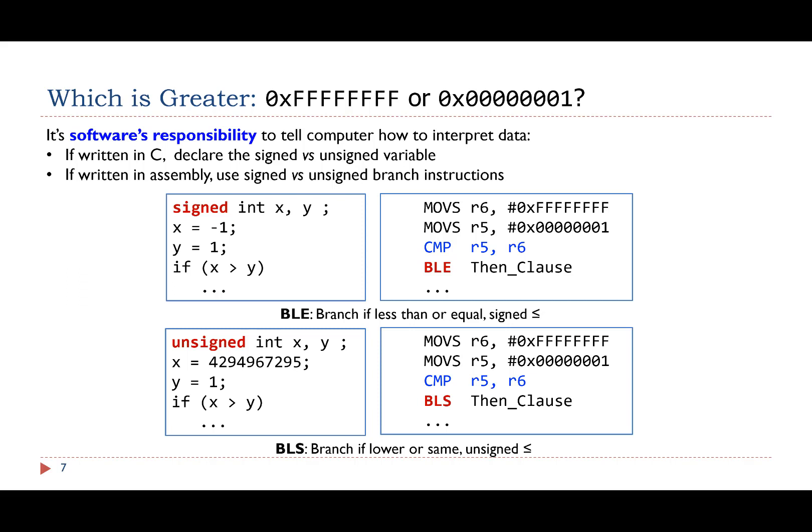It is the software's responsibility to select the right conditional branch instruction. If the software is developed in C language, the compiler will choose the right branch instructions, depending on whether the variables are declared as signed or unsigned in the C program. For example, when variables X and Y are declared as signed integers, the compiler will choose BLE as the conditional branch instruction in the compiled program. On the other hand, the compiler will choose BLS if variables X and Y are declared as unsigned integers in C.